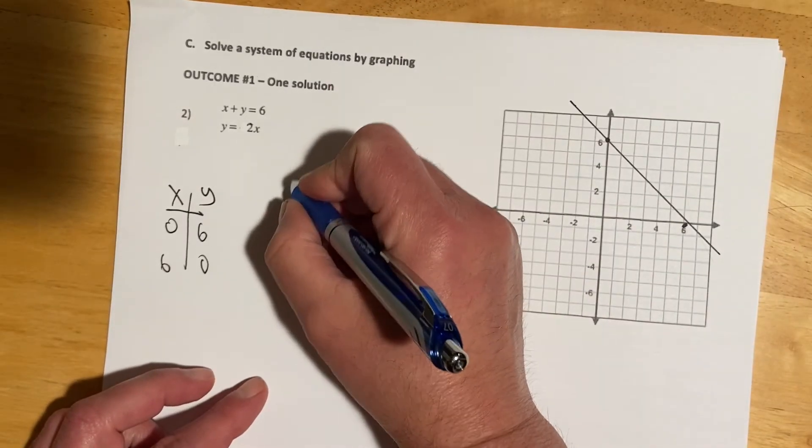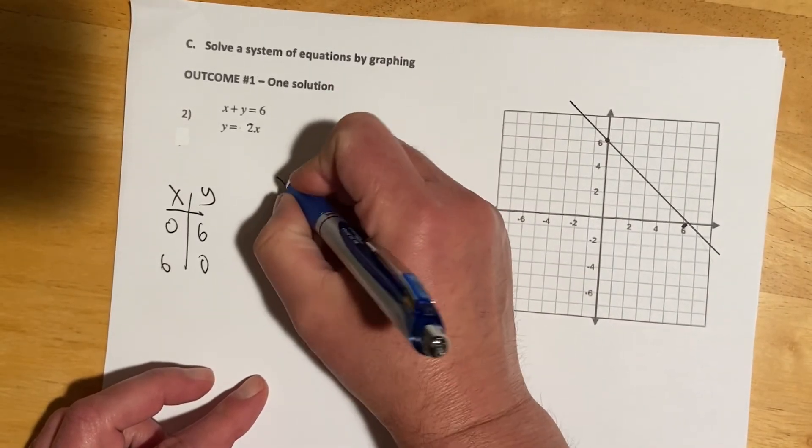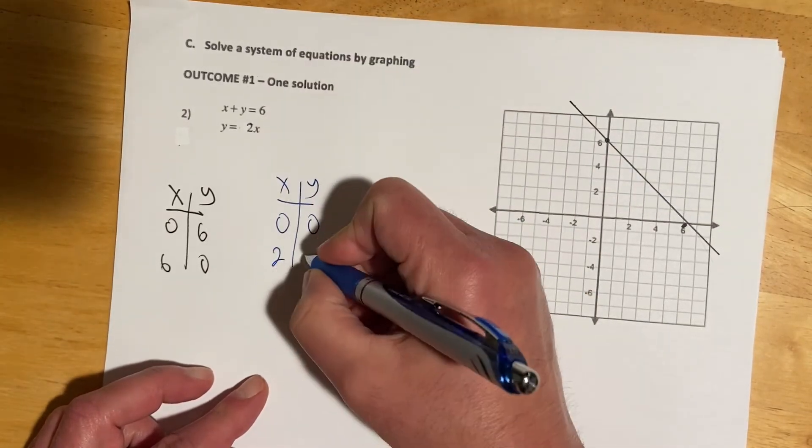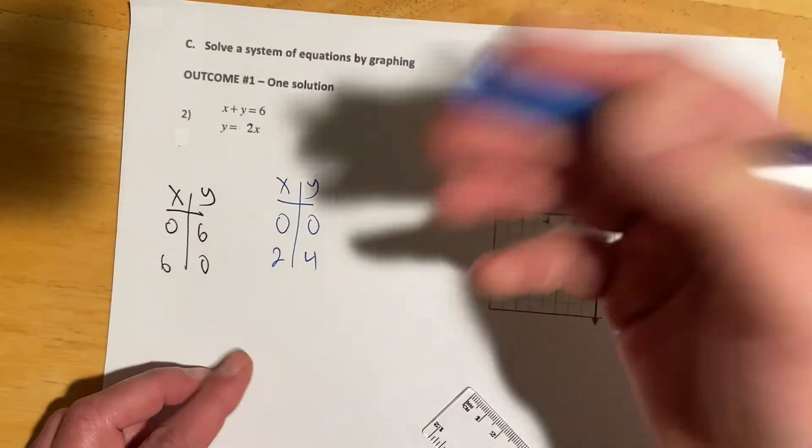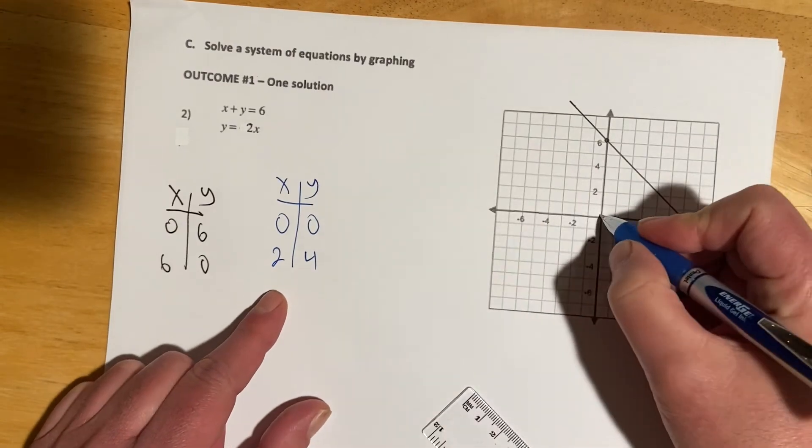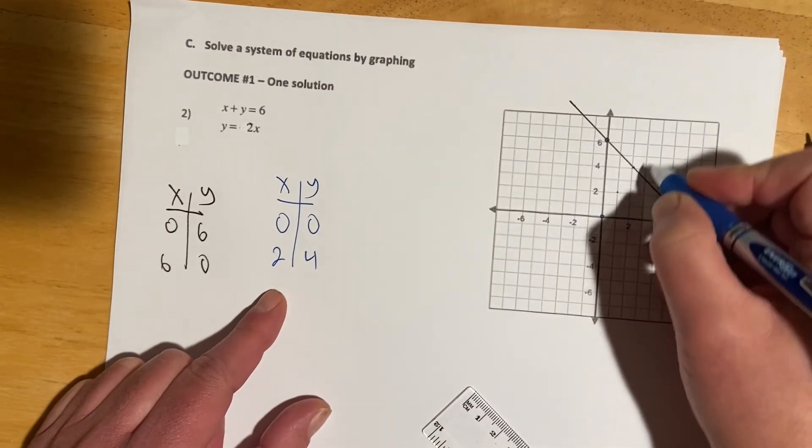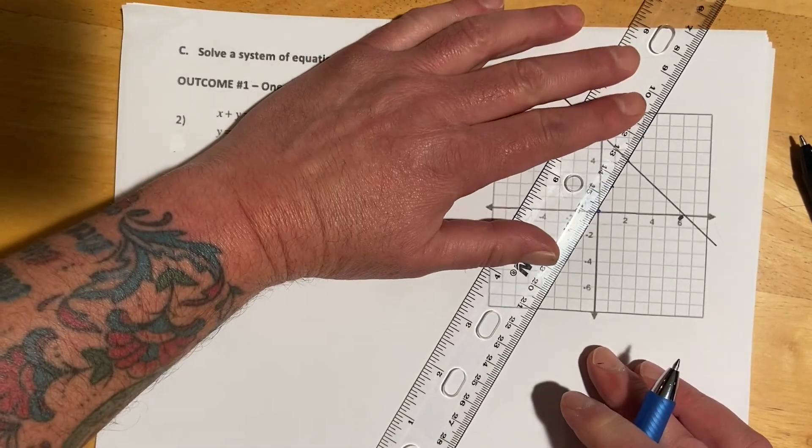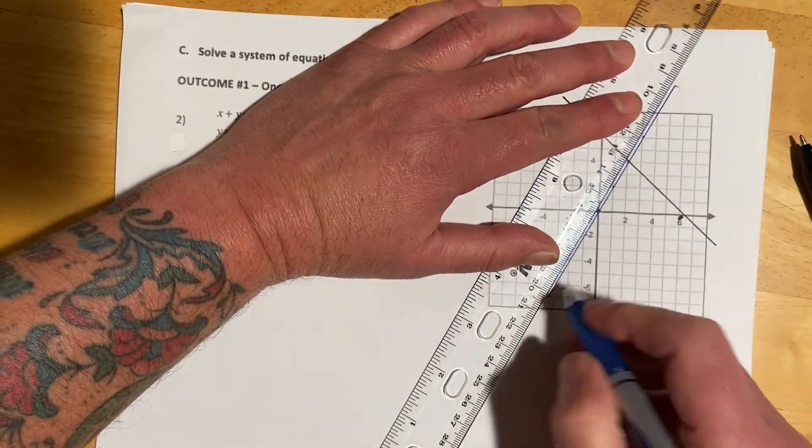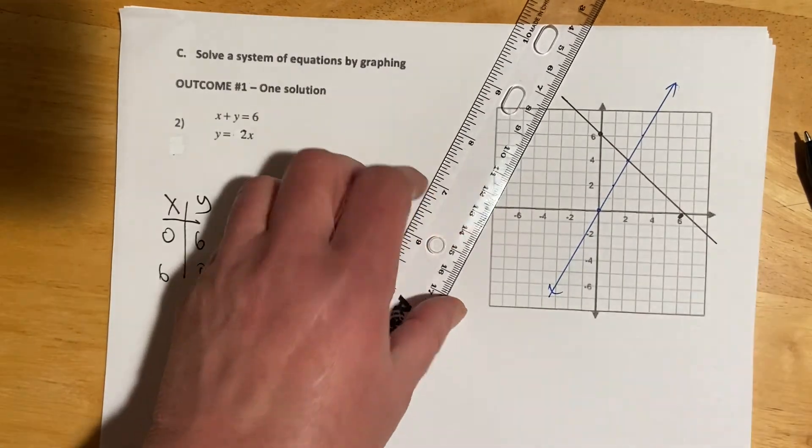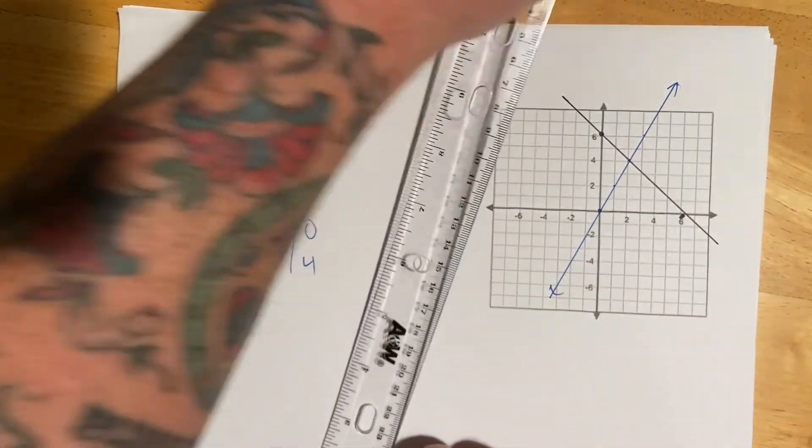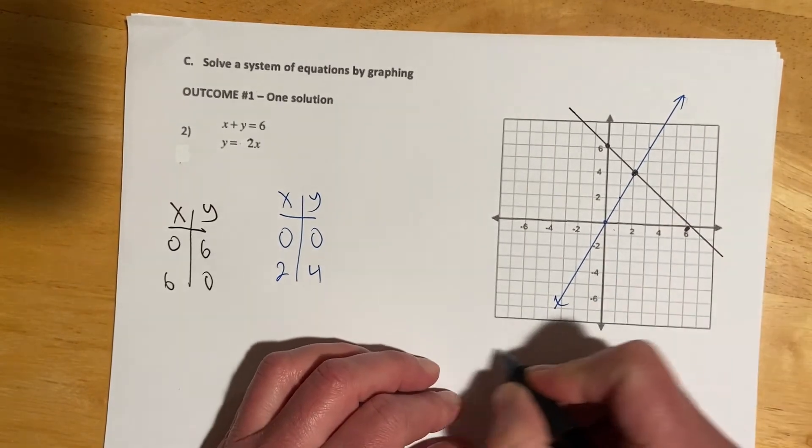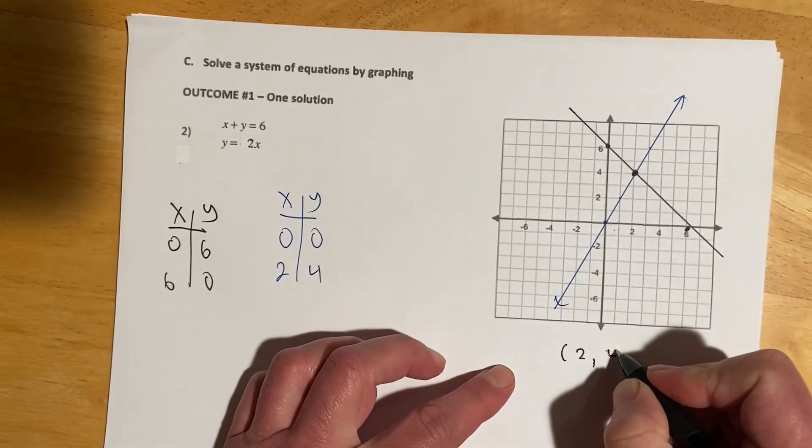And then y equals 2x. So if y equals 2x, I'll just do when x is 0, y is 0. But when x is 2, y would be 4. It doesn't matter what two points I pick. Just a couple. And then I can also use the slope if I prefer to do that. And much easier on the computer, because it'll draw nice straight lines for you. So then looking at my graph, it looks like they intersect at 2, 4.